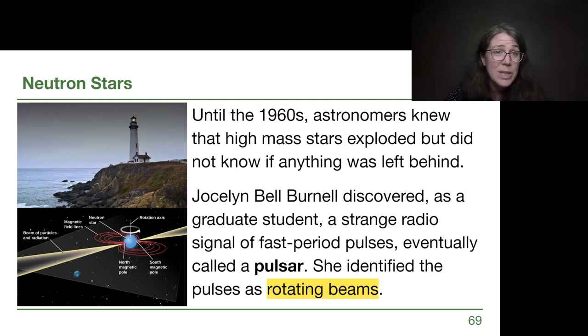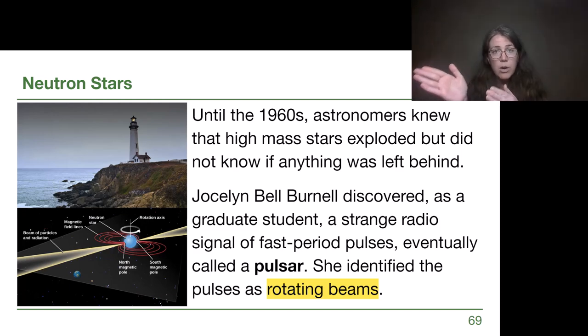Until the 1960s, we did not have an answer to this question. Astronomers didn't know if there was anything left behind after a Type 2 supernova because there was nothing observable. It was Jocelyn Bell Burnell that discovered, as a graduate student, that there was a specific type of radio signal that seemed like fast pulses, faster than any object known to astronomy at the time could make.